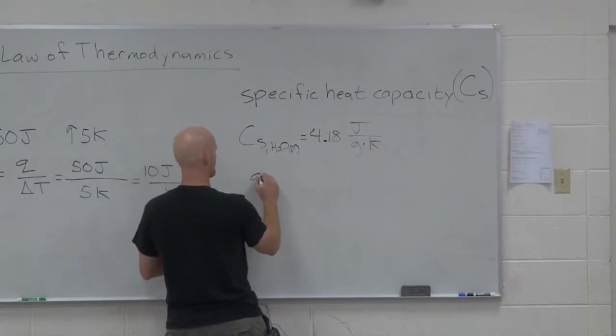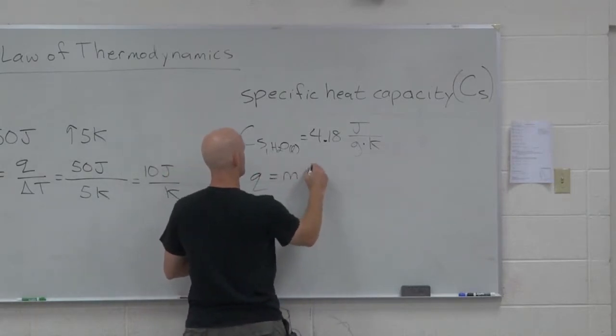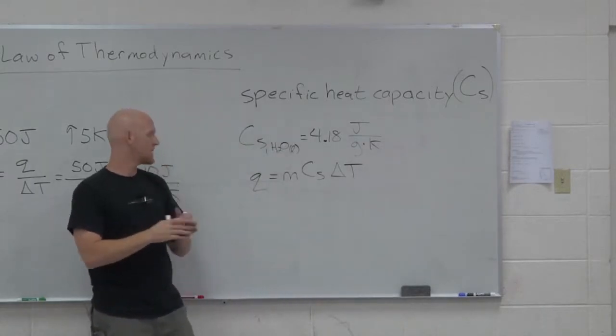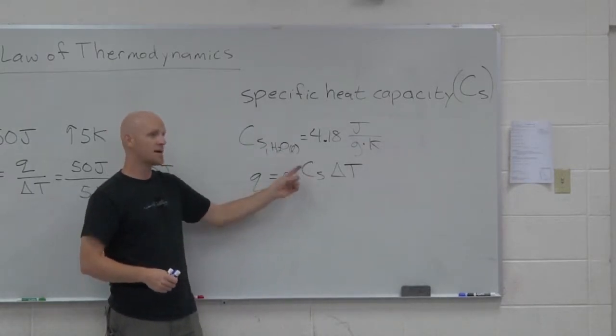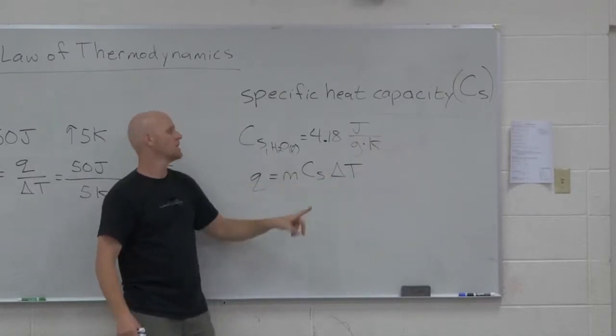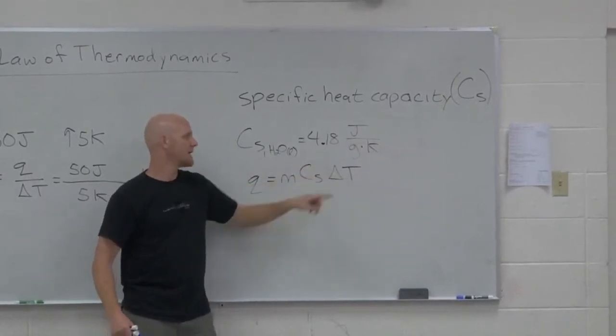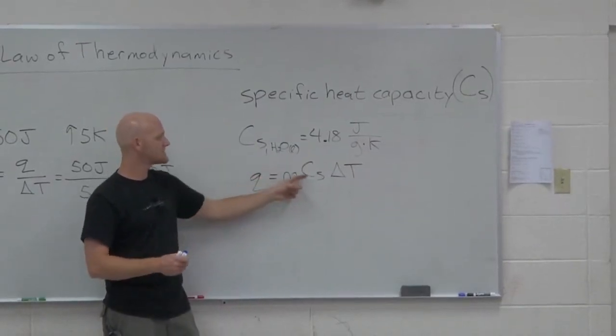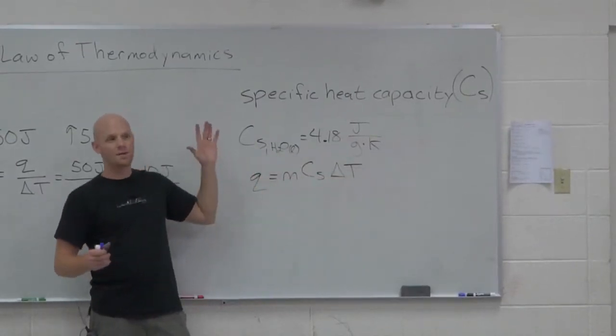And notice this is where you learned back in the day the equation q equals mc delta t. So notice if we had 2 grams, we had to multiply the heat capacity, the specific heat capacity, by 2. If we wanted to change 2 kelvin, we had to multiply the heat capacity by 2.